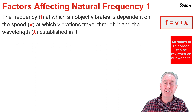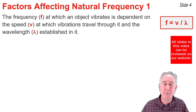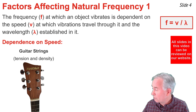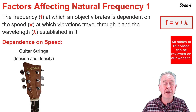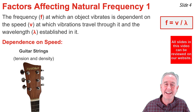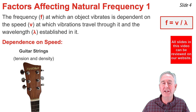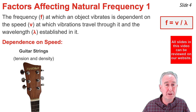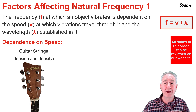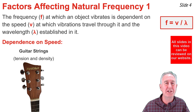Let's consider three illustrations of how natural frequency can be controlled by controlling speed. On the guitar, six strings are made of different materials with different densities, and a peg lets you tighten or loosen tension. Tightening the tension causes the speed of vibrations in the string to increase, producing higher frequencies and higher pitches. A higher-density string produces lower vibration speeds, lower frequencies, and lower pitches.